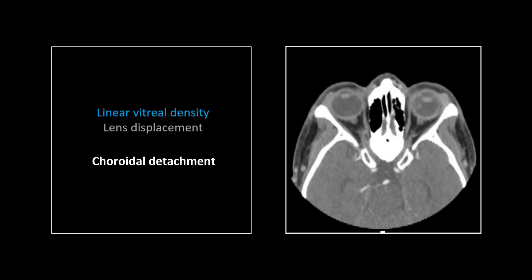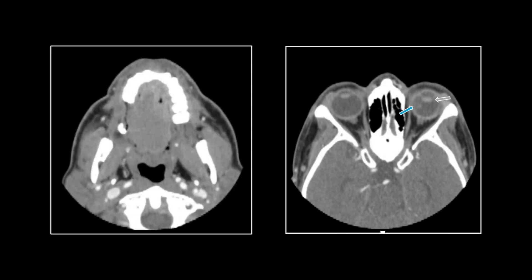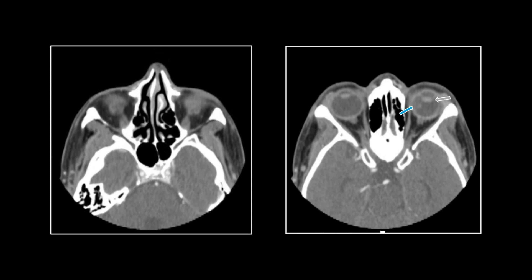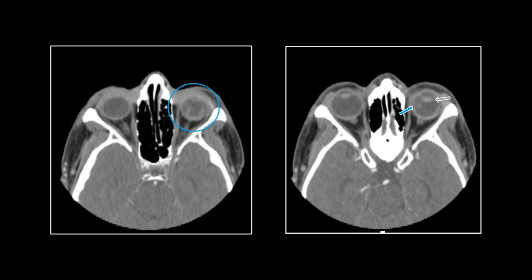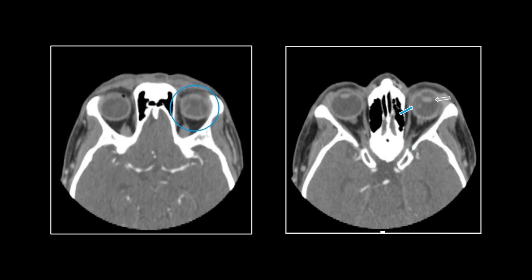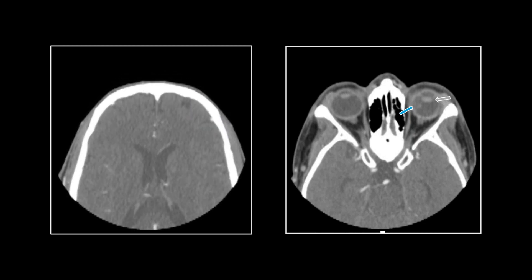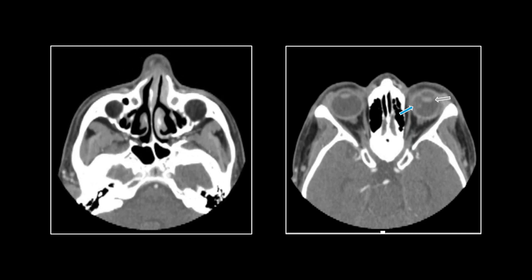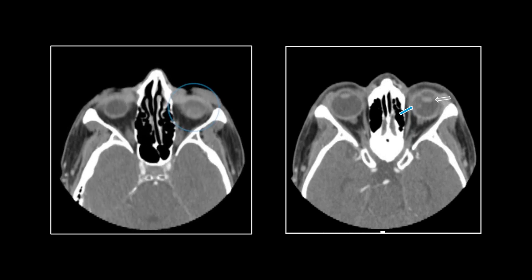This is quite a case. There is actually linear density within the globe — you can see it on both sides. In addition, look at the posterior displacement of the lens compared to the opposite side. So that is a lens subluxation. This was minor trauma that led to this, but that is typically the case. Retinal or choroidal detachment usually happens in a myopic patient but can follow just minor trauma. So even though it was minor trauma, it managed to sublux the lens and detach the retina or choroid.